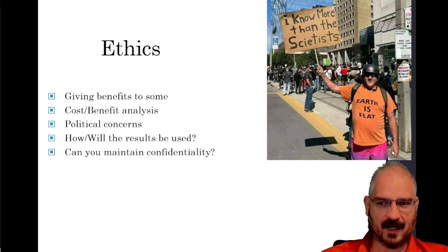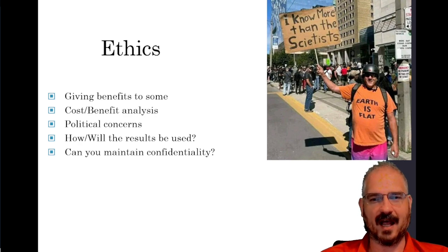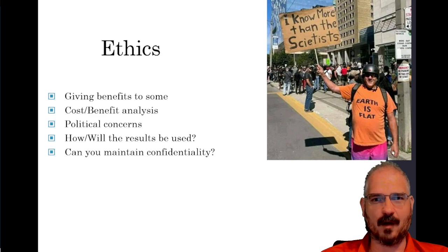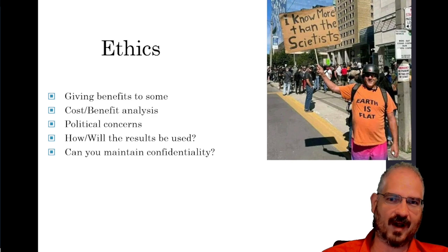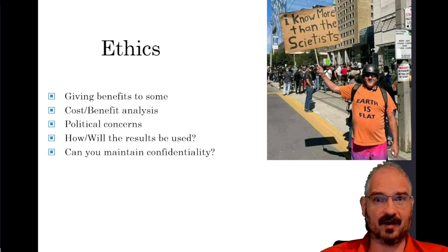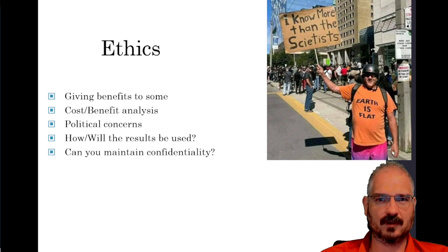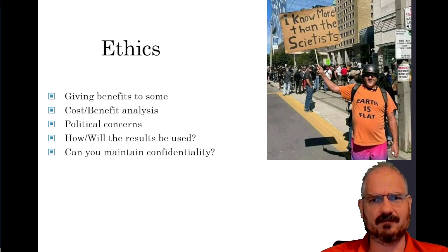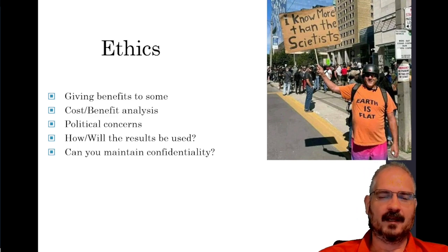There are ethical issues applicable to all research that need to be specifically highlighted for evaluation research. Number one: it's very common in evaluation research to give benefits to some but not others. Some neighborhoods might get increased police patrols and reduced crime while others don't. Which neighborhoods should be chosen? If some people get new job training programs, who gets the new programs that will help them find jobs, and who doesn't? If you're doing this in one county in a state, how do you pick that county and how do you deal with the ethical issues of providing help to this group but not all others who need it just as much?